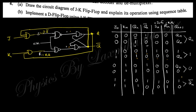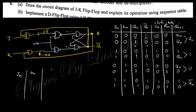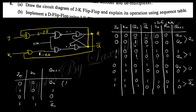So you finally obtain this type of output. This is actually the JK flip-flop. The simplified truth table shows Jn, Kn, and Qn+1: when Jn=0 and Kn=0, the output is Qn (no change); when J=1 and K=0, the output is 1 (Set); when J=0 and K=1, the output is 0 (Reset); and when J=1 and K=1, the output is Qn-bar (Toggle). These are the operational outputs of the JK flip-flop.